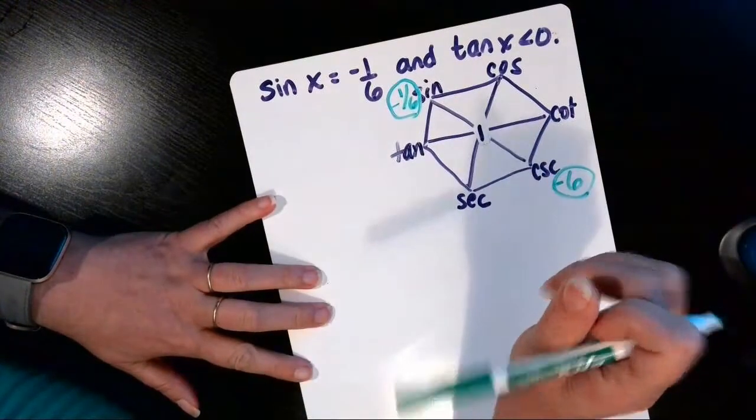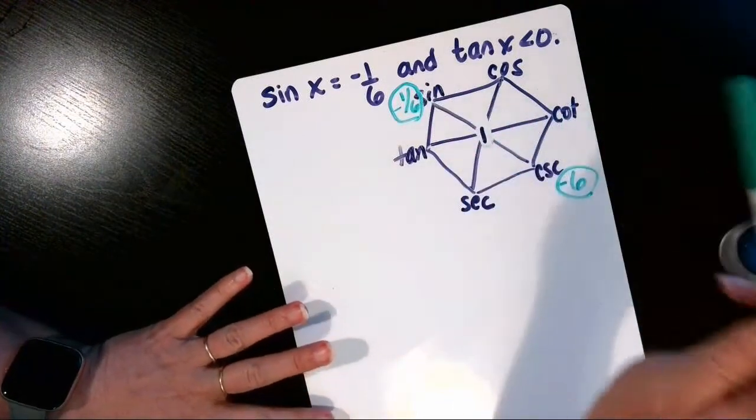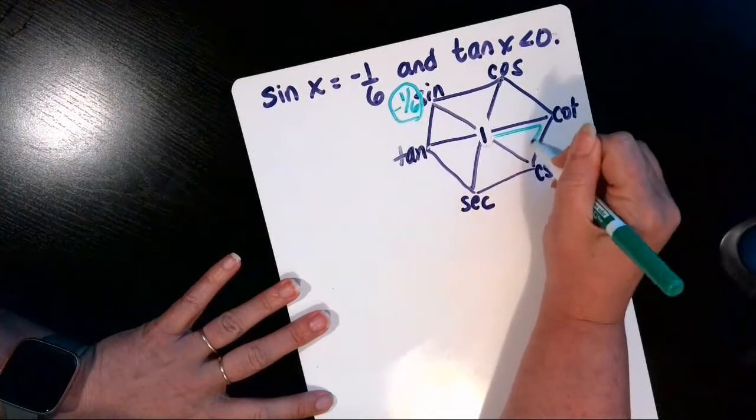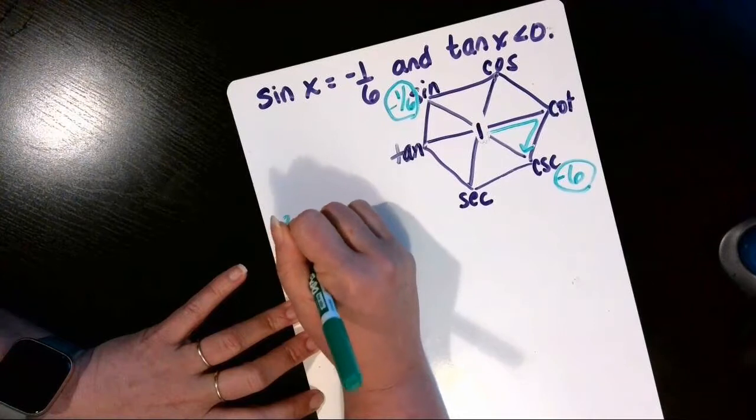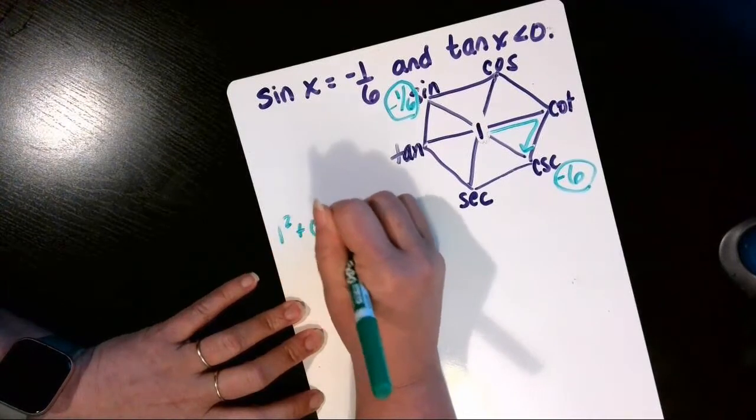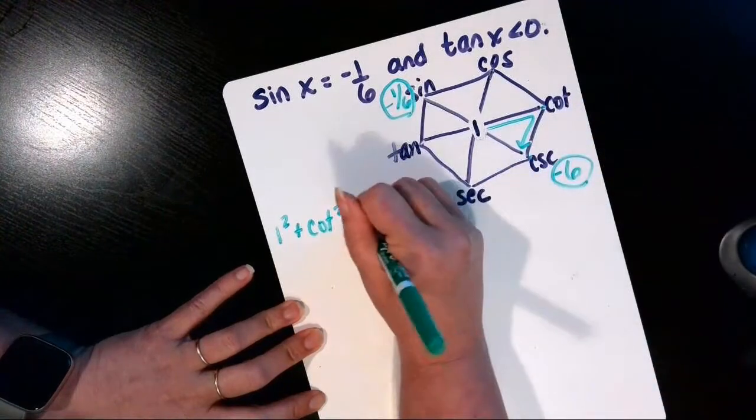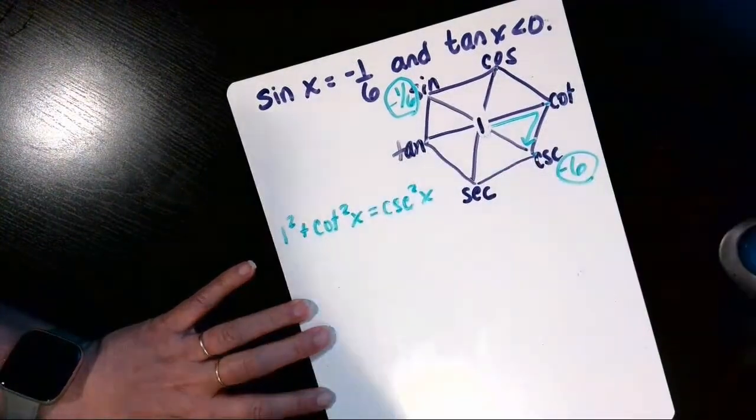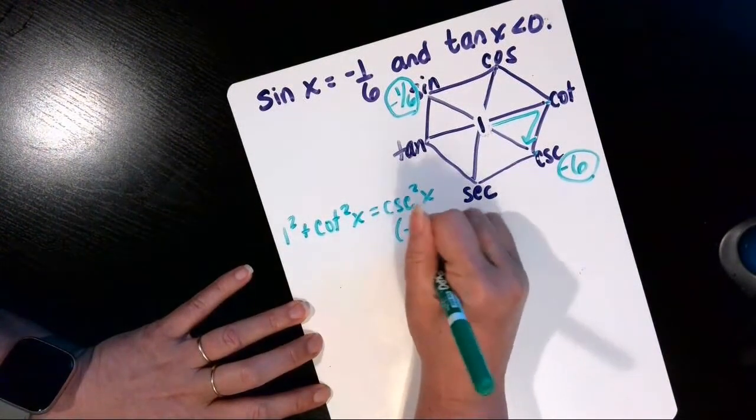Since I don't like fractions all that much, I'm going to use the Pythagorean identity: 1 squared plus cotangent squared x here in this corner is equal to cosecant squared x down in this corner. Then we can substitute in negative 6 for the cosecant and square that.